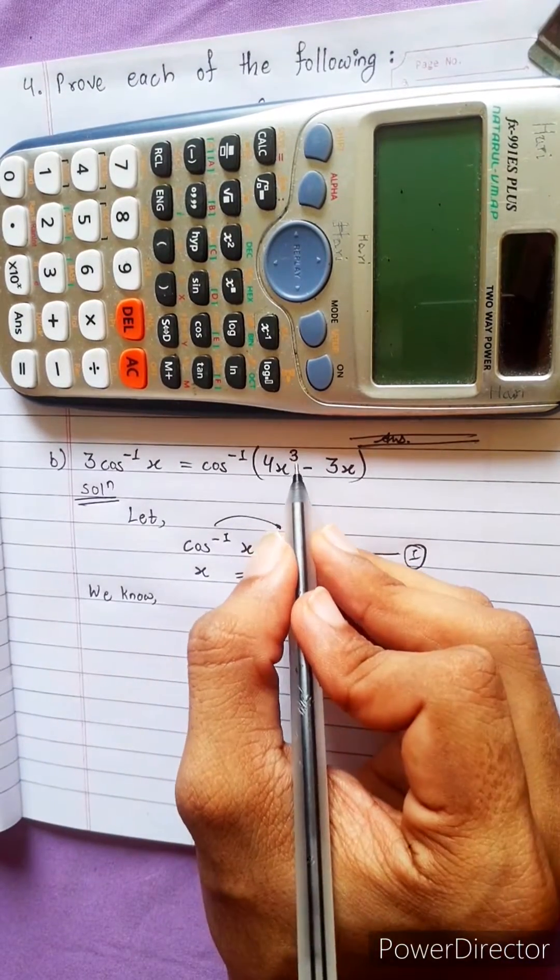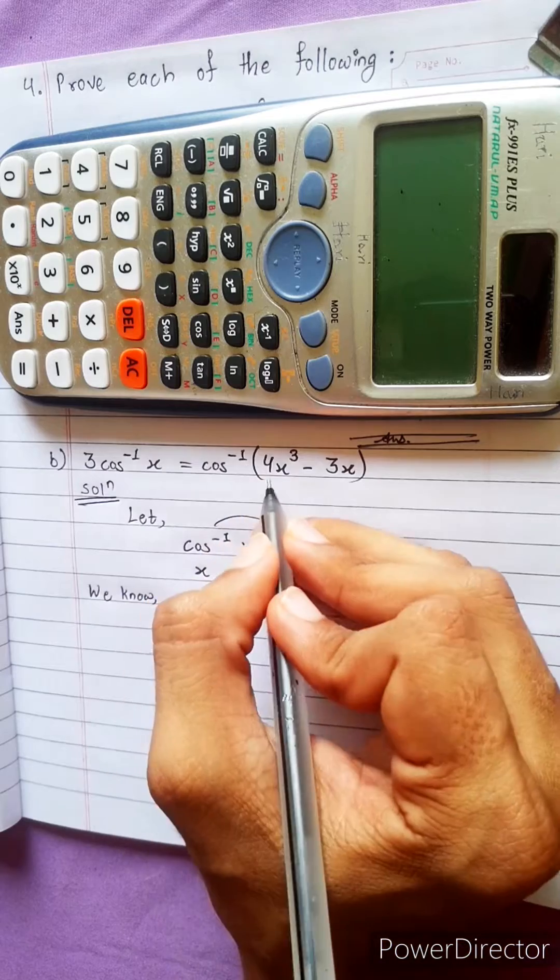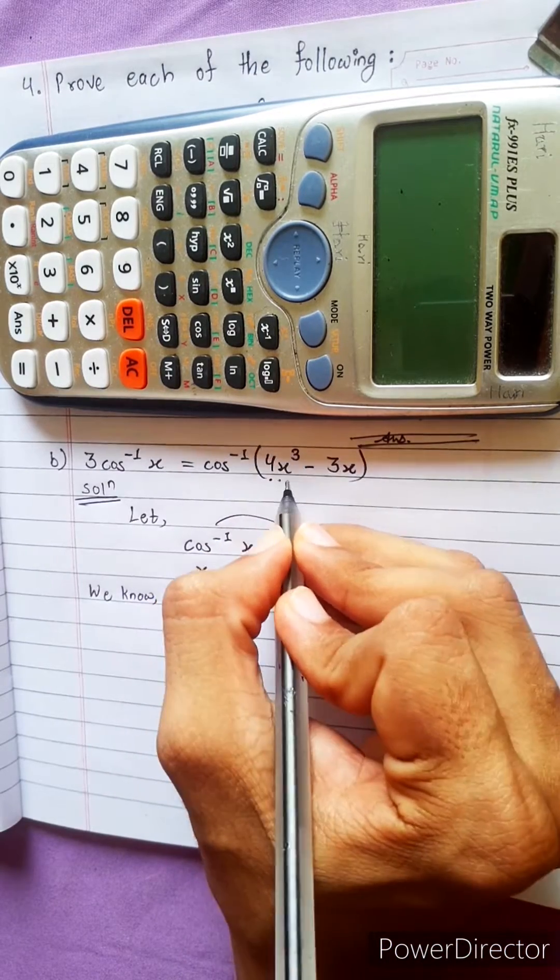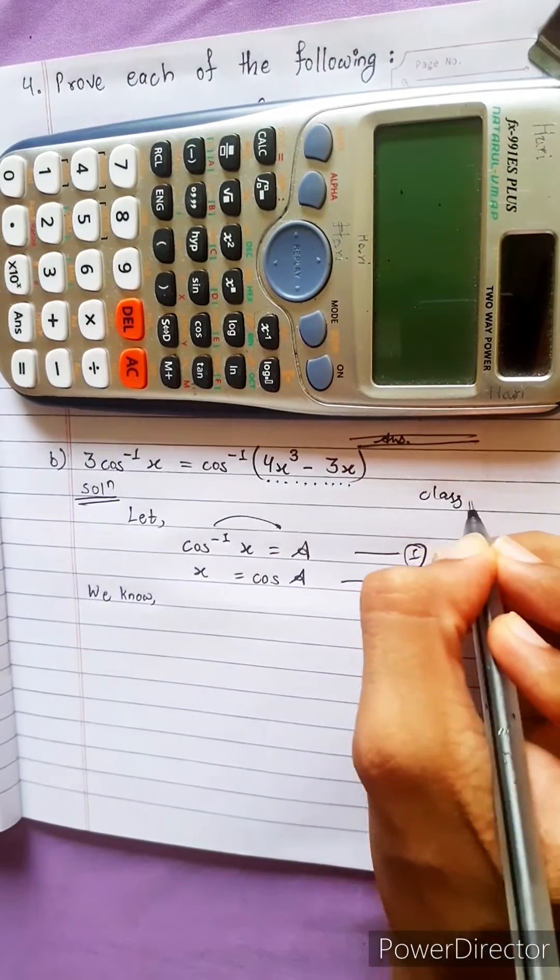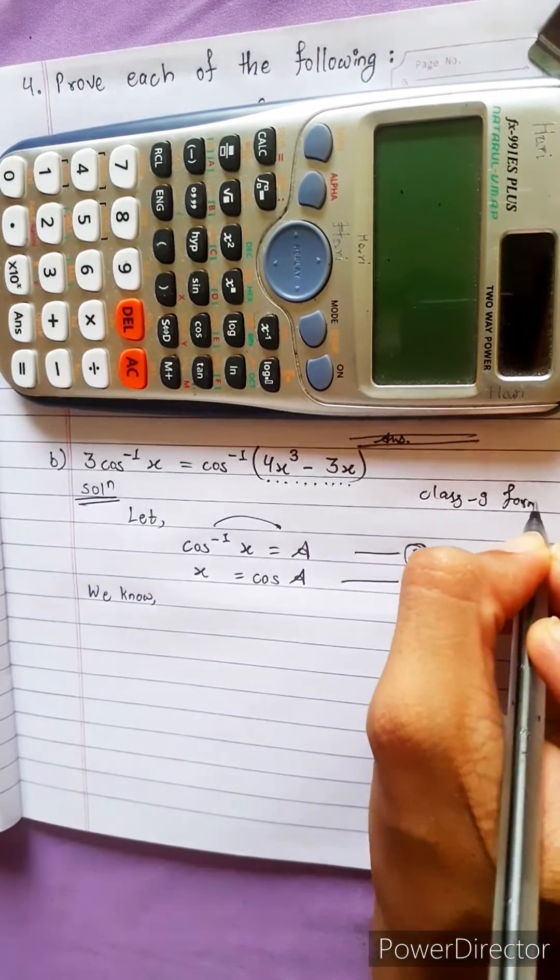Now here is 4x cube minus 3x. We have to remember by looking at this, 4x cube minus 3x is related to which formula? Class 9 formula. We have to remember all those small formulas.